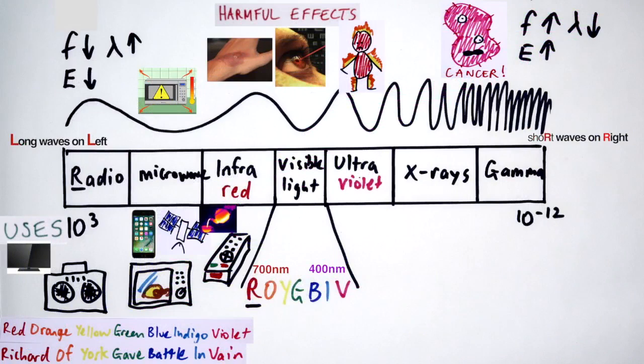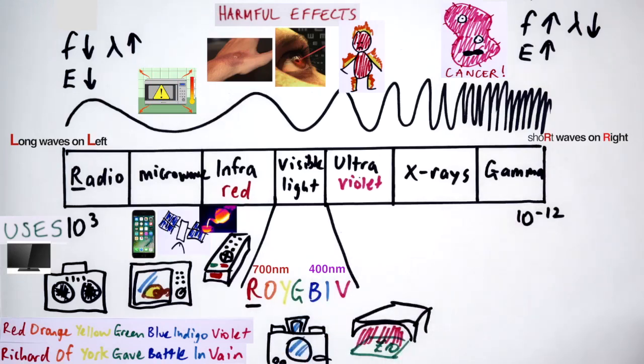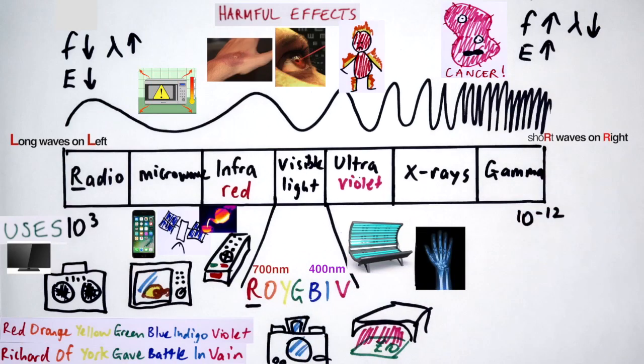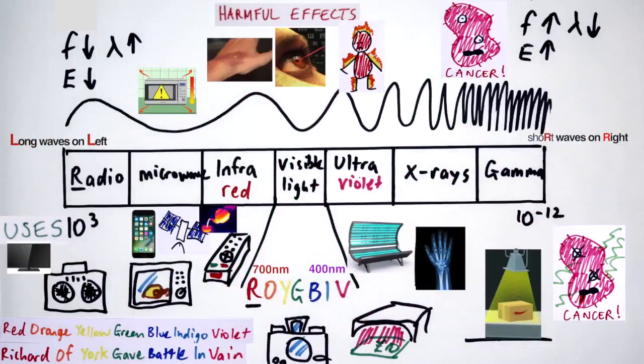Particularly useful for firemen if trying to find someone in a smoke-filled room. Visible light is used in photography. Ultraviolet is used for security, such as checking for counterfeit money and sunburns. X-rays can be used for checking for broken bones at hospitals and looking inside luggage at airports. Gamma rays can be used for sterilising food and medical equipment and detecting and treating cancer.